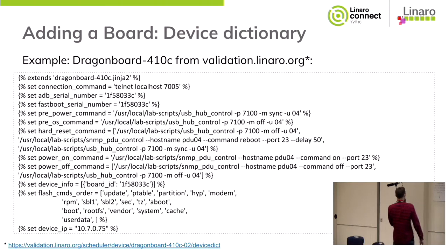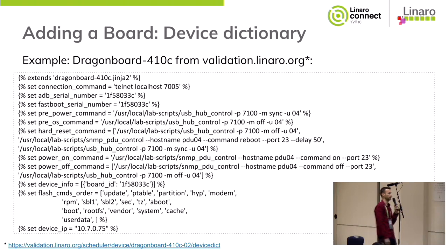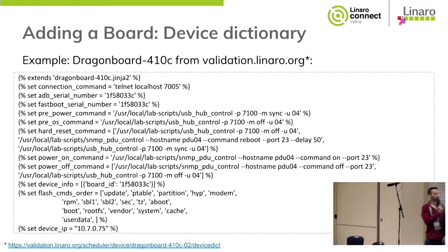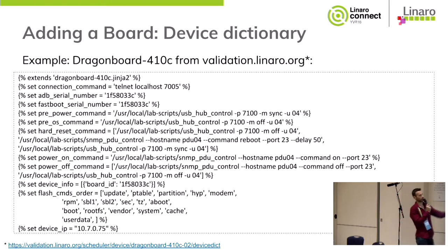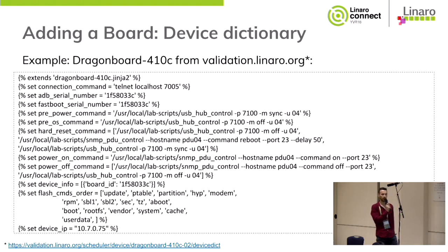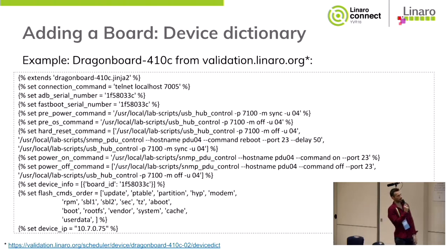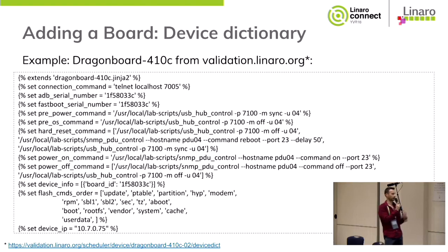Here is an example of a device dictionary from validation.linaro.org — a real device that is running. It has many things defined: different Fastboot and ADB serial numbers, a command to switch USB hub control, presumably to switch the USB link with the device under test on or off, and PDU control to control a power switch over the network. So for a new developer, this could be a bit hard to implement the first time when adding a first board.